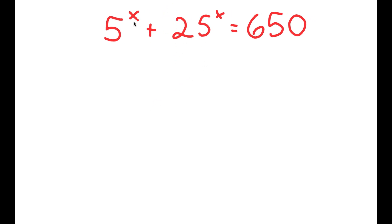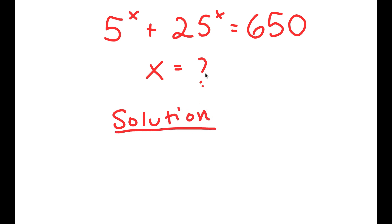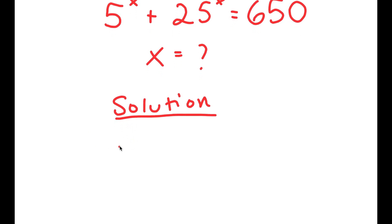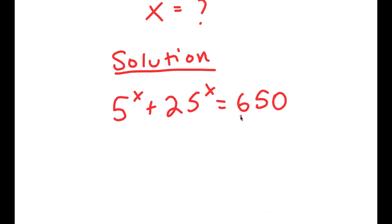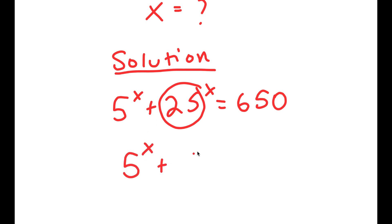In this equation, we only have one variable x. I'm going to first start by rewriting this over here so I have more space to solve. What I'm first going to do is rewrite 25 as 5 squared. So now I get 5 to the power of x plus 5 squared to the power of x is equal to 650.